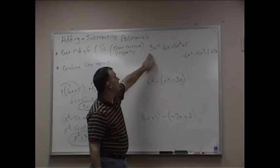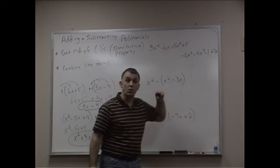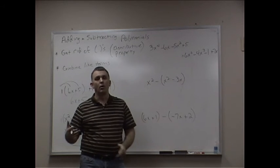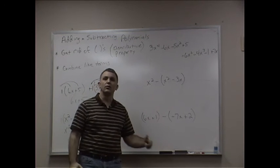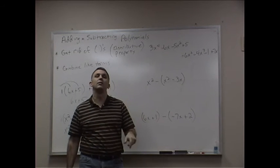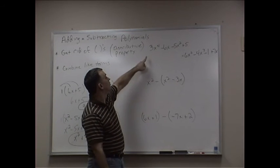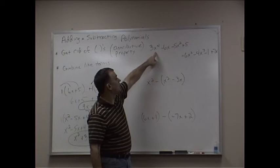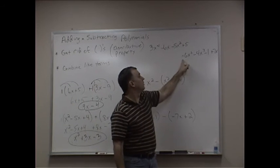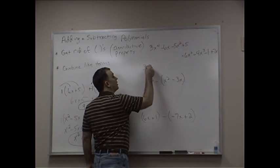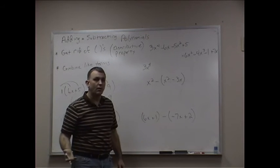Now, when you look at this, these are written in a pretty strange order. These are not written in descending order. Most of the time, we want to put our answers in descending order. That means the highest exponent first down to the lowest exponent. So when I look at this, I've got a 3x to the 4th. Do I have anything else that's x to the 4th? The answer is no. So I'm going to write 3x to the 4th. Nothing to combine with that.